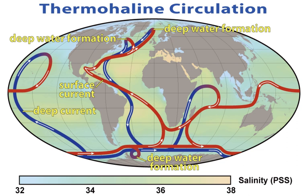He went on to found the academic discipline of oceanography at the University of Edinburgh, which remained the center for oceanographic research well into the 20th century. Murray was the first to study marine trenches and in particular the Mid-Atlantic Ridge, and map the sedimentary deposits in the oceans. He tried to map out the world's ocean currents based on salinity and temperature observations, and was the first to correctly understand the nature of coral reef development.